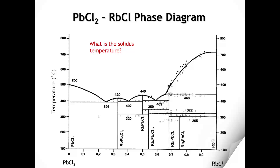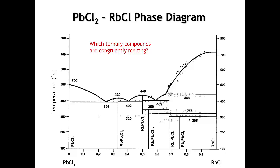Next question: on this phase diagram, we can see one, two, three, four, five different ternary phases. Of those five phases, which are congruently melting? Remember that for a congruently melting compound, the line representing that compound will extend all the way up to the liquidus. We see that there are two congruently melting compounds in this phase diagram: rubidium lead(2) chloride(5), and rubidium lead chloride(3). The other three ternary phases here are all incongruently melting compounds.